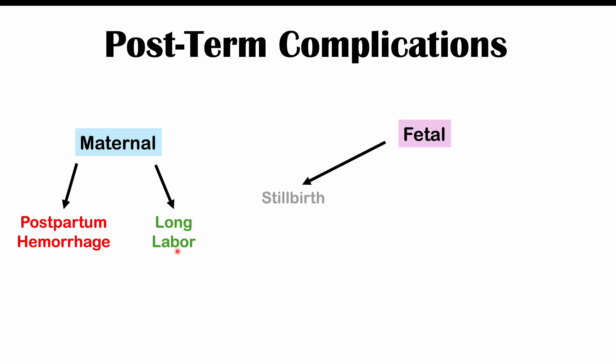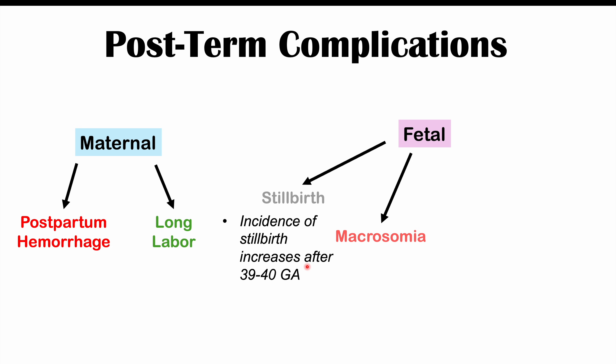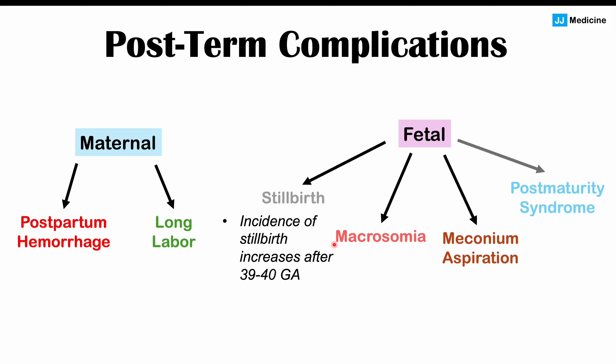Fetal complications include stillbirth — as gestational age passes 39 to 40 weeks, there is a steady and rapid increase in stillbirth incidence — as well as macrosomia, meaning a large body, since the infant continues to grow over time. Meconium aspiration is another important complication, where the infant has its first bowel movement — meconium — while still inside the uterus, and that meconium is then aspirated into the infant's lungs, leading to breathing issues and cyanosis after delivery. There is also an increased likelihood of post-maturity syndrome.